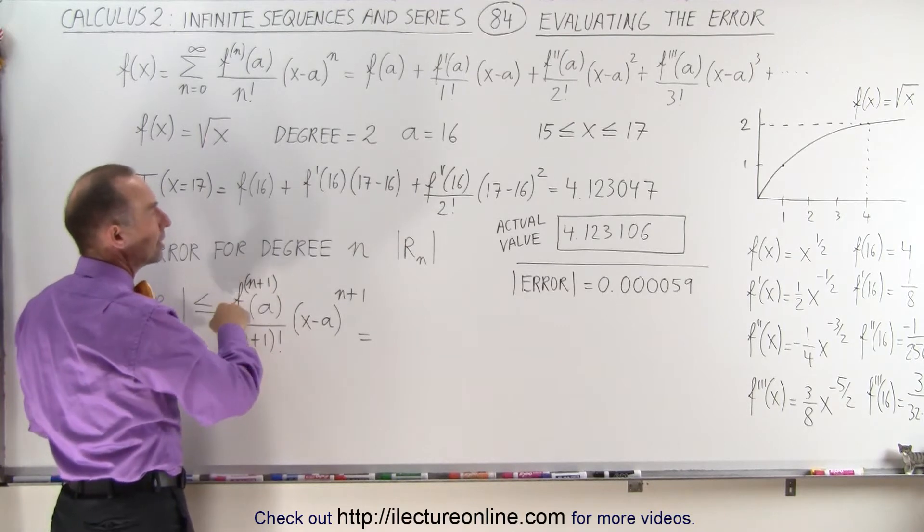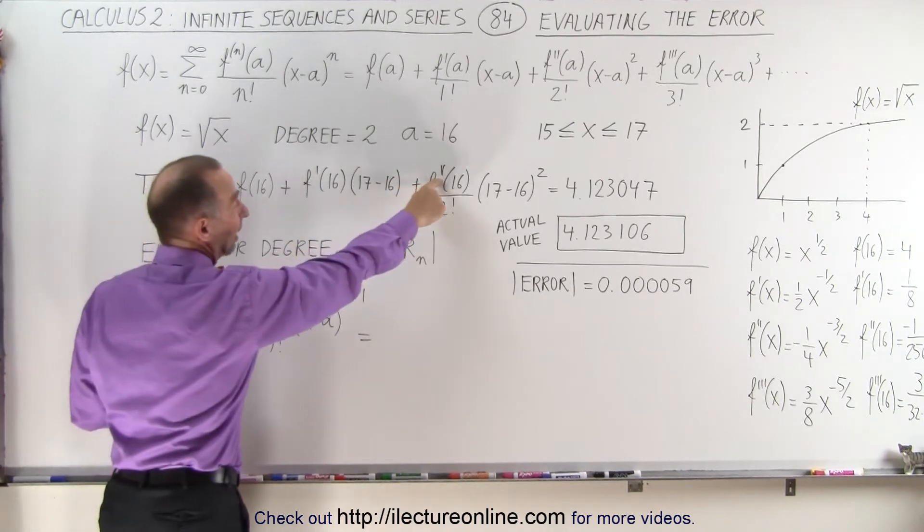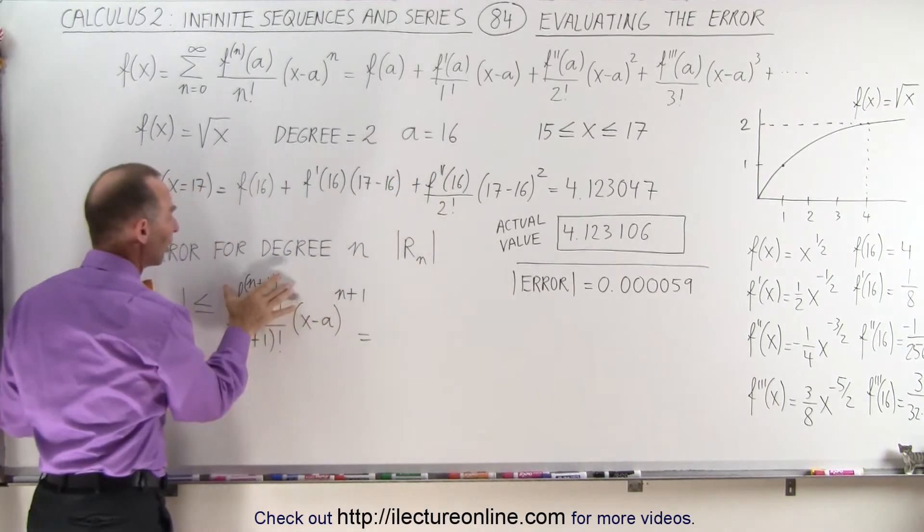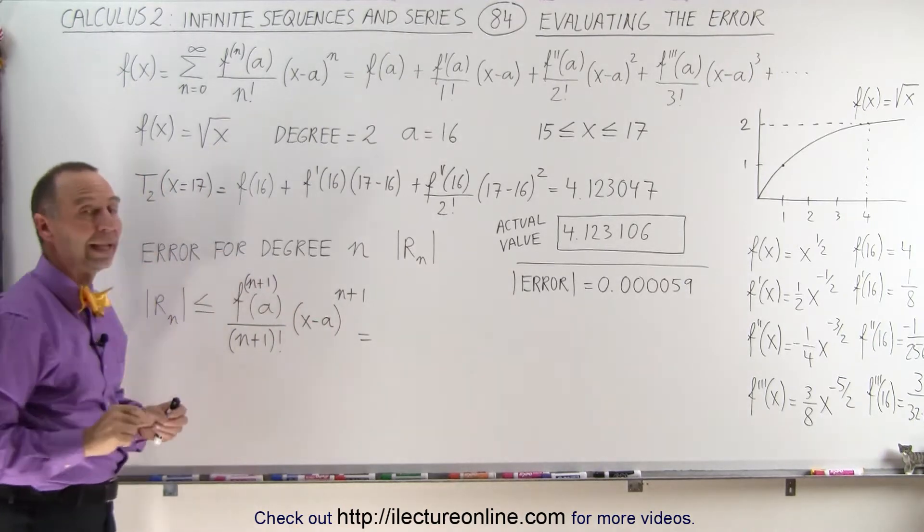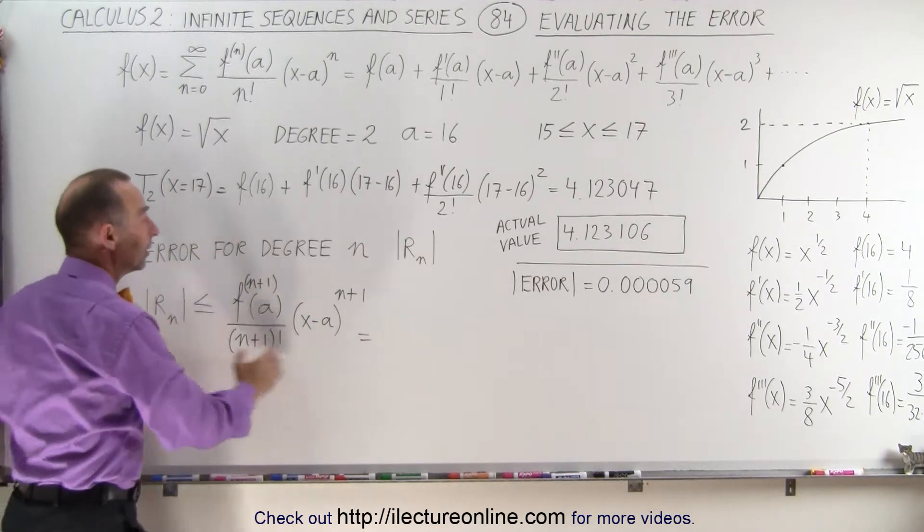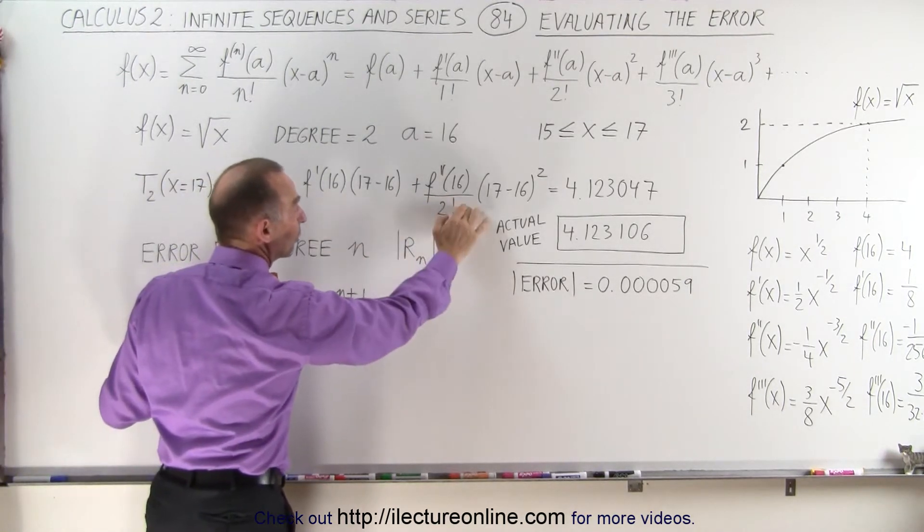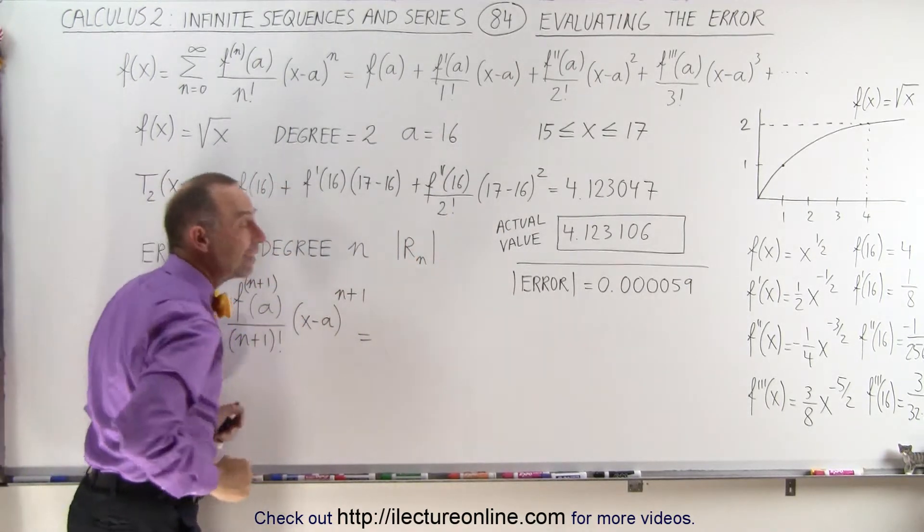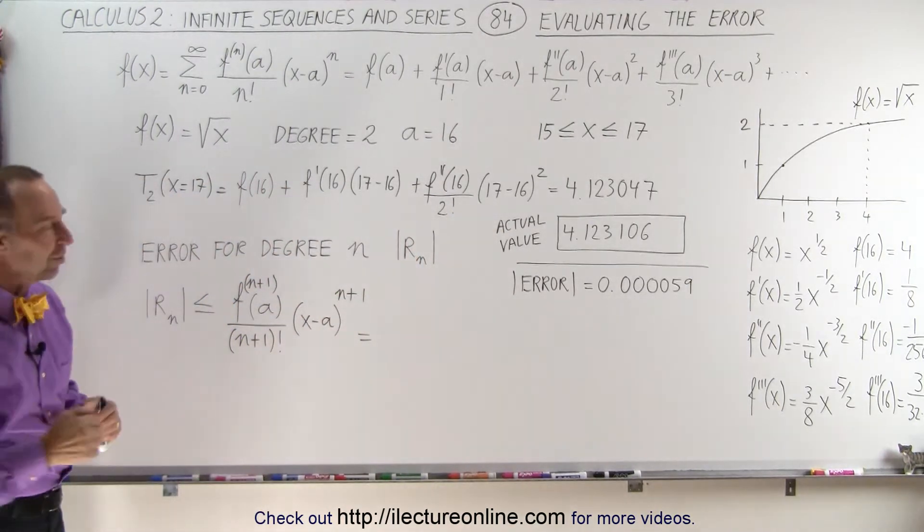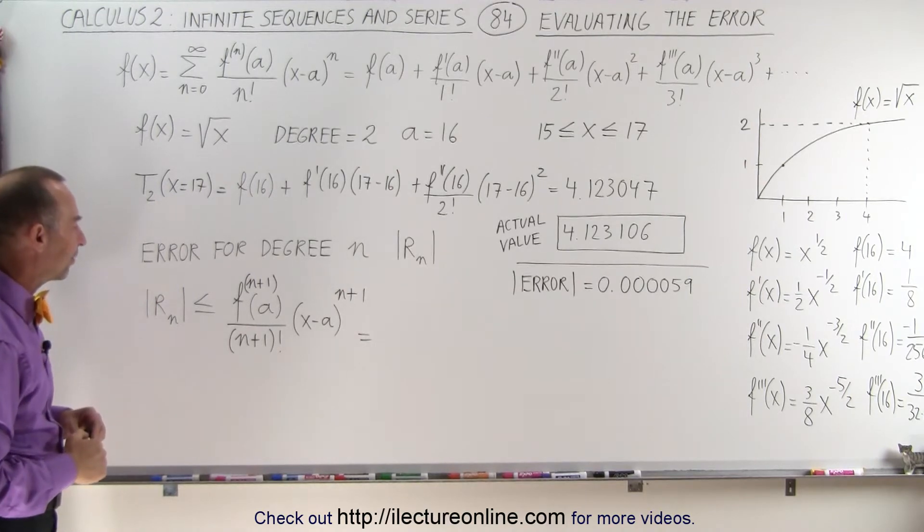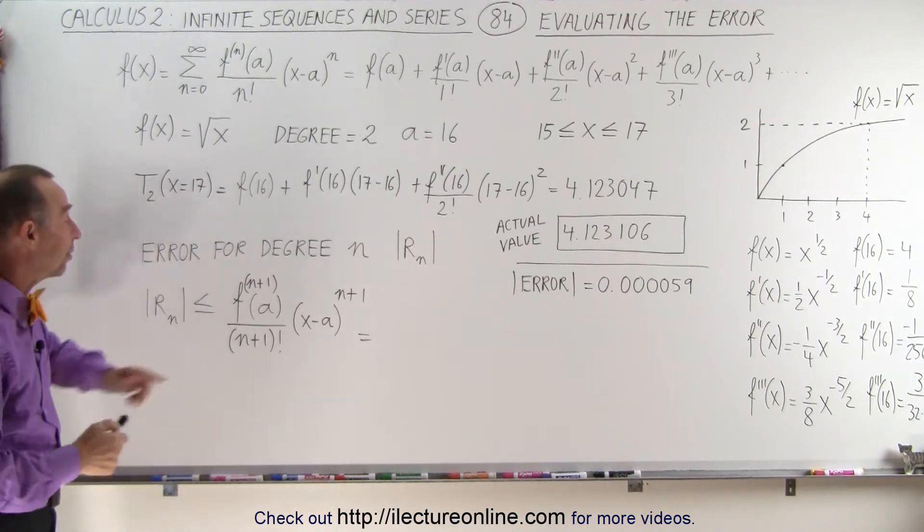we evaluate the next term, the third derivative term, because the last term here was second derivative. We'll evaluate the third derivative term, and we'll find that our error that we got using the first three terms is going to be less than the value of the next term. And that's how we can estimate the error we can expect. So let's go ahead and evaluate this and see what we have.